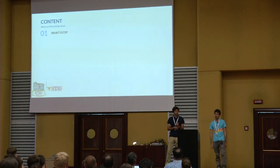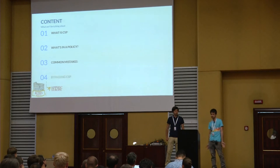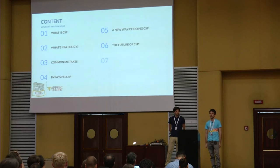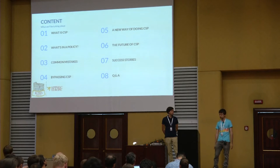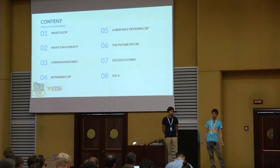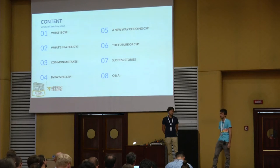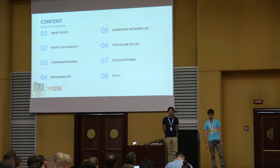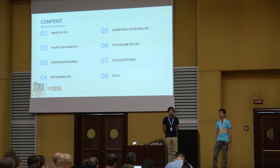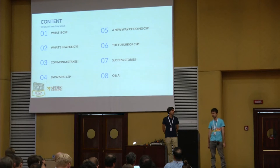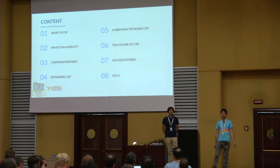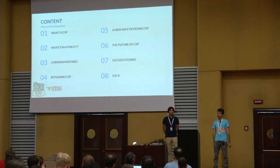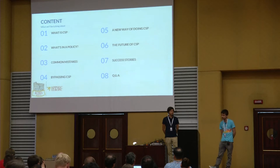We're going to talk about Content Security Policy. We'll first explain what CSP is and its aims, then we'll inspect and dissect a policy — the directives and what each controls. Then we'll wear the breaker hat and try to break policies: common deployment mistakes, bypasses, and whether something is inherently flawed in the current model. Finally, we'll present a new way of doing CSP and discuss its future, limitations, and some success stories.